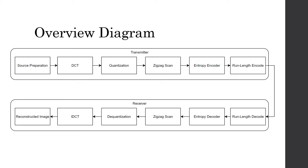In this diagram, we can see that the transmitter first prepares the source, takes the discrete cosine transform, quantizes all the components, takes a zigzag scan, and when we do the entropy encoding on the transmitting side, this can either be the Huffman encoding that we learned in class, or in my project, I chose the arithmetic encoding.